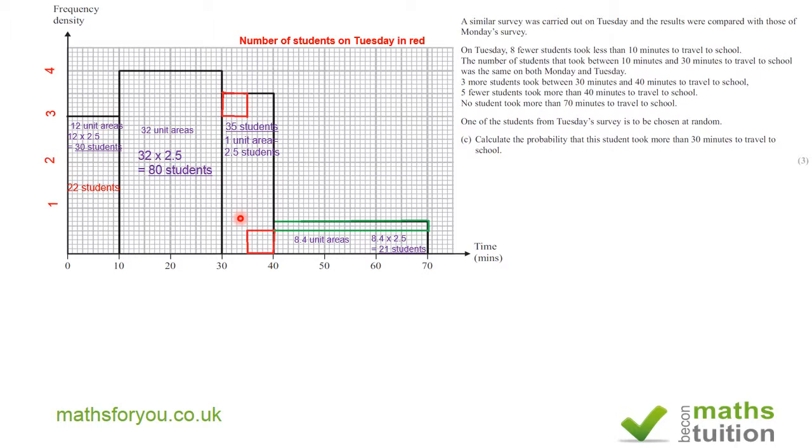On Tuesday for this time interval of 30 to 40, three more students travel to school within this time interval so now I got 38. For this time interval five fewer students travel to school, so if we subtract 5 from 21 we get 16. If you add 32 plus 80 plus 38 plus 16 we end up with 156 students.